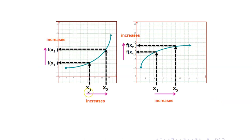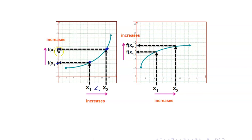Let me illustrate this in this diagram here. x1 is less than x2. The y-coordinate at x1 is f(x1), and the y-coordinate at x2 is f(x2). If x1 is less than x2, notice that f(x1) is less than f(x2). So hence, as the value of x increases, the value of y also increases.